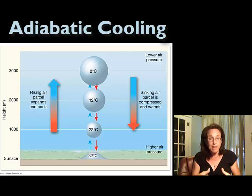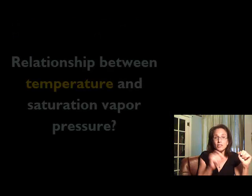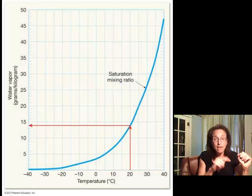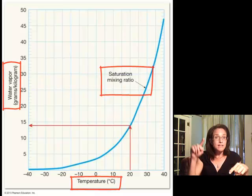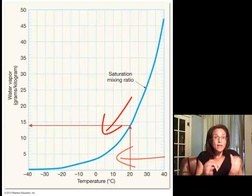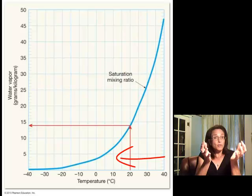So as this air mass rises and cools, what happens to that air mass's relationship with its saturation vapor pressure? Do you remember the graph that we looked at that related temperature with saturation mixing ratio? As temperature declines, saturation mixing ratio goes down. So as we move an air mass up, it's going to cool. And as it cools, its saturation point decreases.